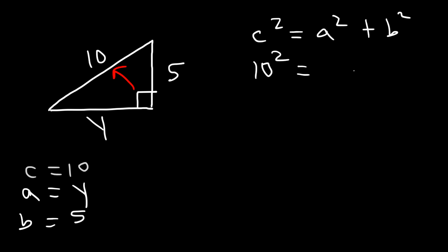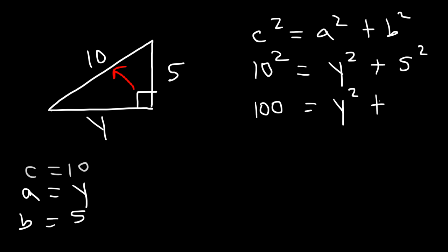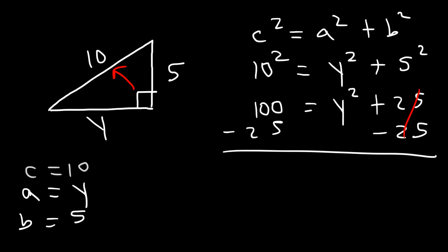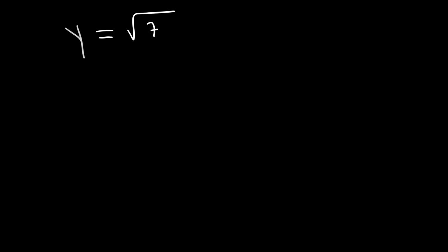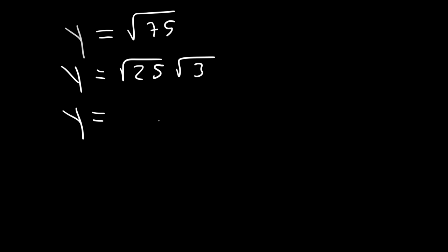So it's going to be 10 squared is equal to y squared plus 5 squared. 10 times 10 is 100 and 5 squared is 25. So we need to subtract both sides by 25. 100 minus 25 is 75. Now our next step is to take the square root of both sides, so y is equal to the square root of 75. To simplify, what perfect square goes into 75? 25 is a perfect square that goes into it. 25 times 3 is 75 and the square root of 25 is 5. So y is equal to 5 square root 3.